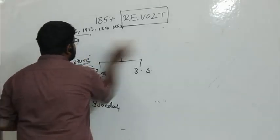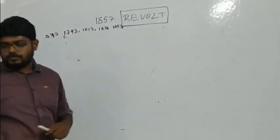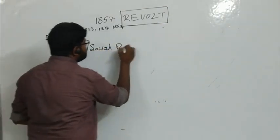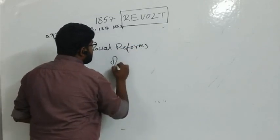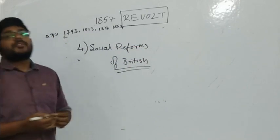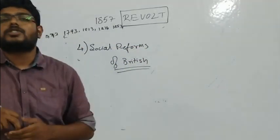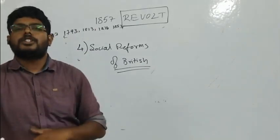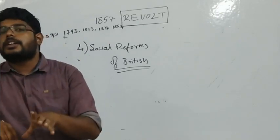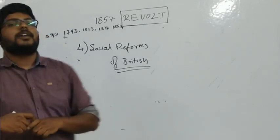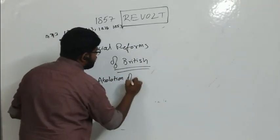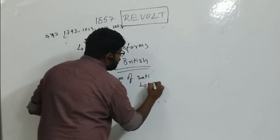The fourth reason is social reforms by the British. The company was asked by the crown not to interfere in the personal matters of Indians — their religion, culture, or traditions. But Lord William Bentinck intervened and gave something called Abolition of Sati, and there was also the Widow Remarriage Act.